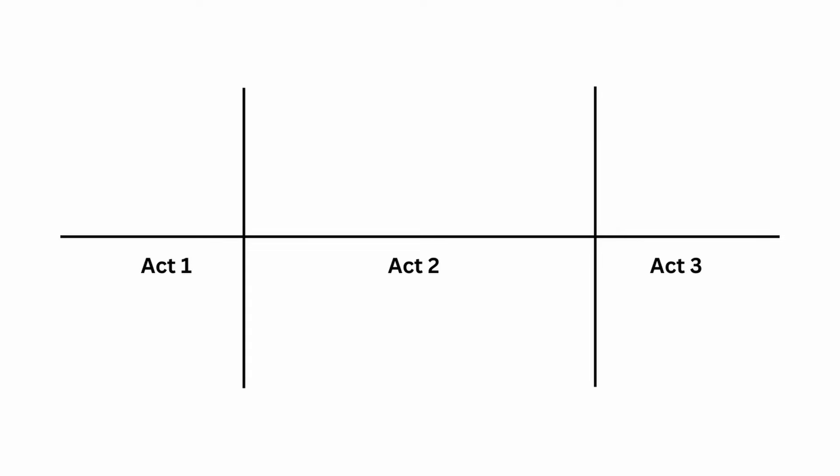You may be wondering, what is this three-act story structure? Well, it has three acts. Act one is the setup. Act two is the confrontation. And act three is the resolution. These things have a certain amount of space in a story. Act one is the first 25% of your story. Act two takes up the most space at 50% of your story. And then act three is another 25% of your story.